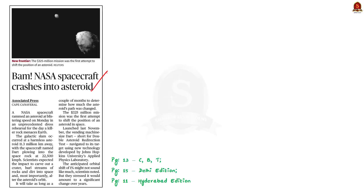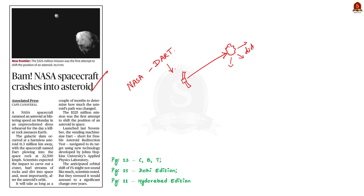Today we are going to start our discussion with this news article. The article talks about the NASA spacecraft named DART — Double Asteroid Redirection Test. The article says that this DART rammed at a harmless asteroid 11.3 million kilometers away from Earth. Scientists expected the impact to carve out a crater and hurl streams of rocks and dirt into space, and most importantly, to alter the asteroid's orbit. This is the crux of the news article. In this context, let us discuss about DART and its objectives.